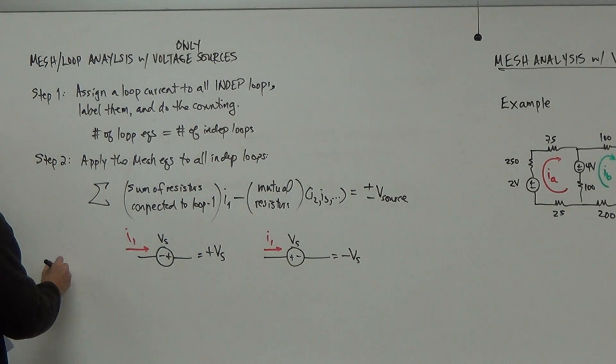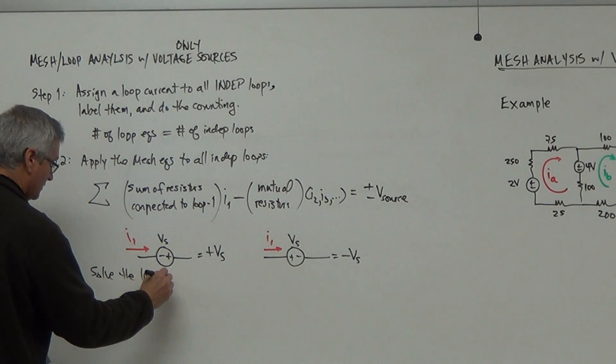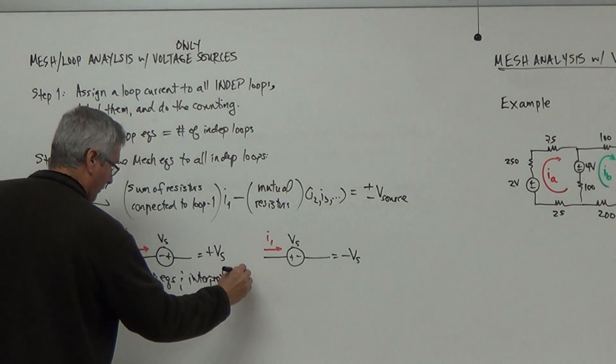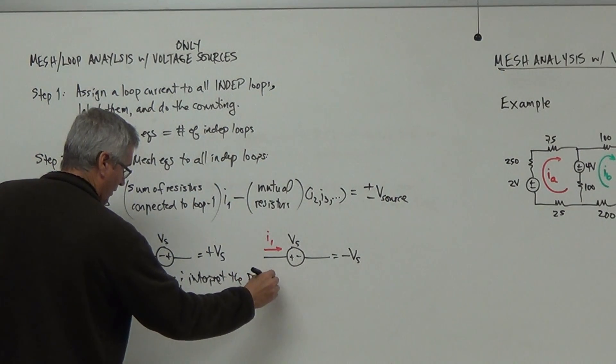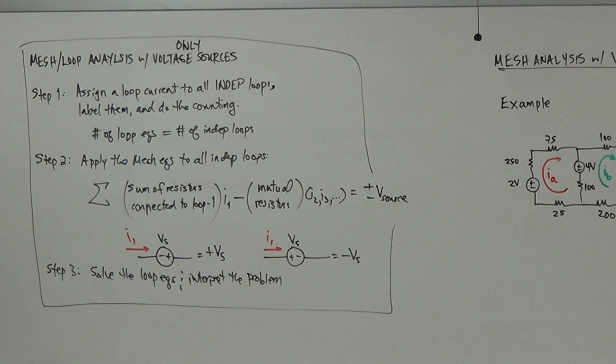So then the final step here is to solve the loop equations and interpret the problem. This may look to you to be all mathematics. It is not. We use mathematics as a tool. Our number one goal is to analyze what is actually happening in the circuit. That being said, we should set up a circuit.